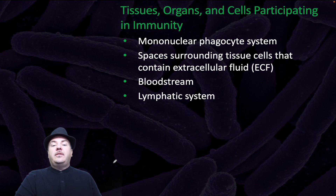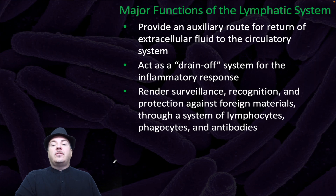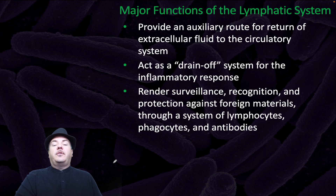Tissues, organs, and cells participating in immunity include the mononuclear phagocytic system, spaces surrounding tissue cells that contain extracellular fluid, the bloodstream, and the lymphatic system. The major functions of the lymphatic system are to provide an auxiliary route for return of extracellular fluid to the circulatory system, act as a drain-off system for the inflammatory response, and render surveillance, recognition, and protection against foreign materials through a system of lymphocytes, phagocytes, and antibodies.